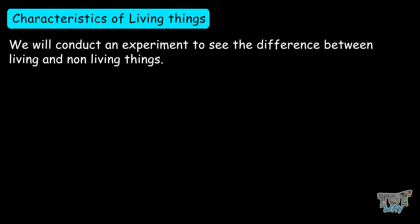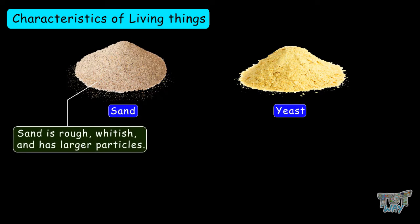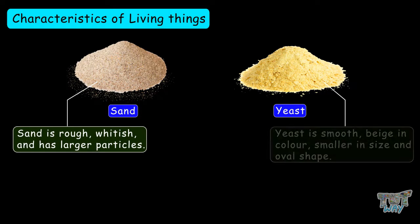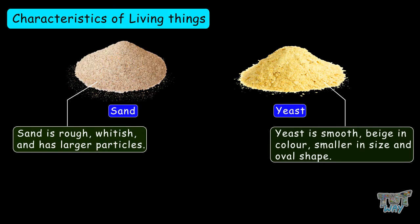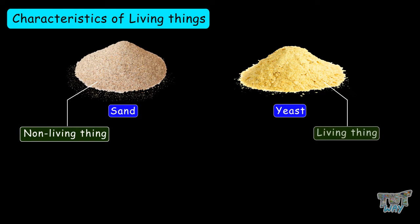Here, we have equal amounts of sand and yeast. Sand is rough, whitish, and has larger particles, whereas yeast is smooth, beige in color, smaller in size, and ovular. Sand is non-living, and yeast is a living thing.